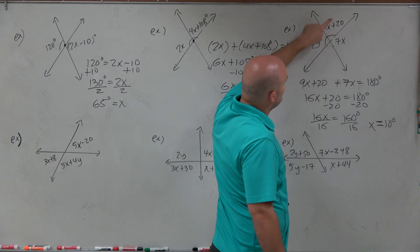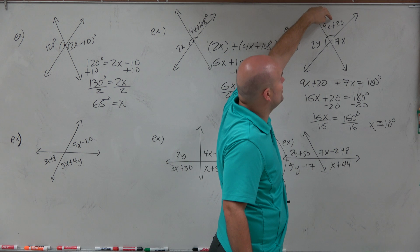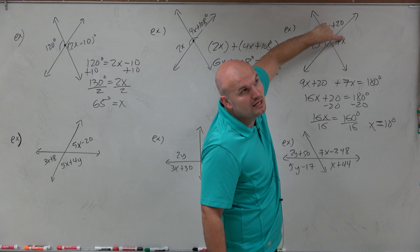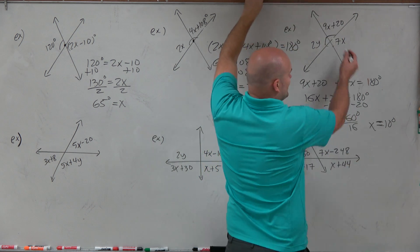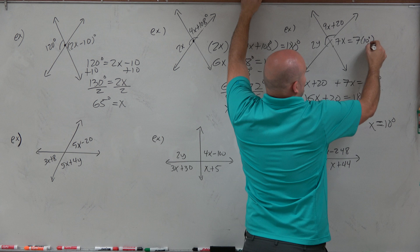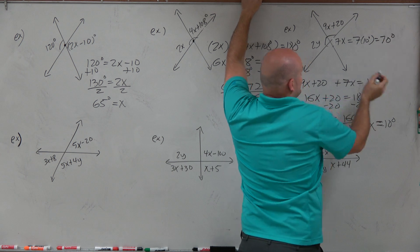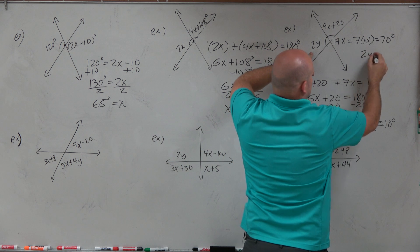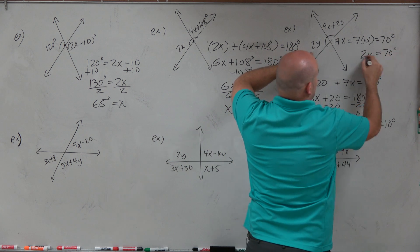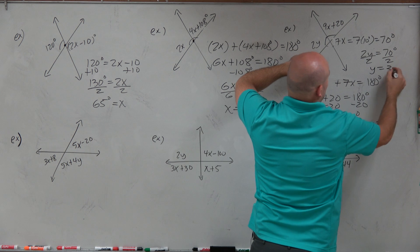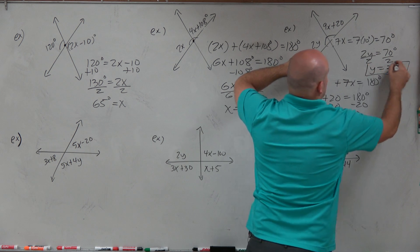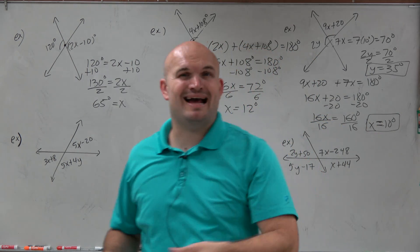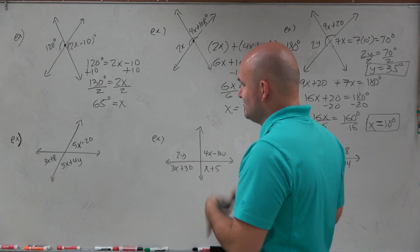Now I can plug in 10 degrees. I know those two angles with 7x and 2y are vertical, so I plug into 7x: 7 times 10 equals 70 degrees. Since those two angles are equal, I write 2y equals 70 degrees. Divide by 2: y equals 35 degrees. So I have solved for both x and y. Just work on one variable at a time.